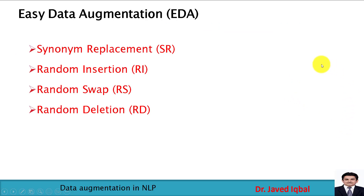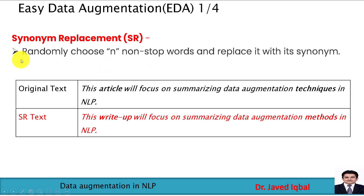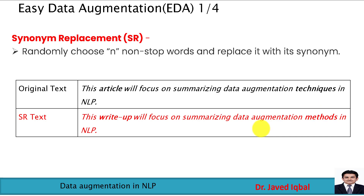The next technique is easy data augmentation. Under easy data augmentation, there are four different types. The first is synonym replacement: we randomly choose N non-stop words and replace them with their synonyms. For example, with the original text 'this article will focus on summarizing data augmentation technique in NLP,' after applying synonym replacement, we replace 'article' with 'write-up' and 'technique' with 'method.' This can be done using word embedding techniques that provide synonyms of words, and the obtained text is a variation of the original.